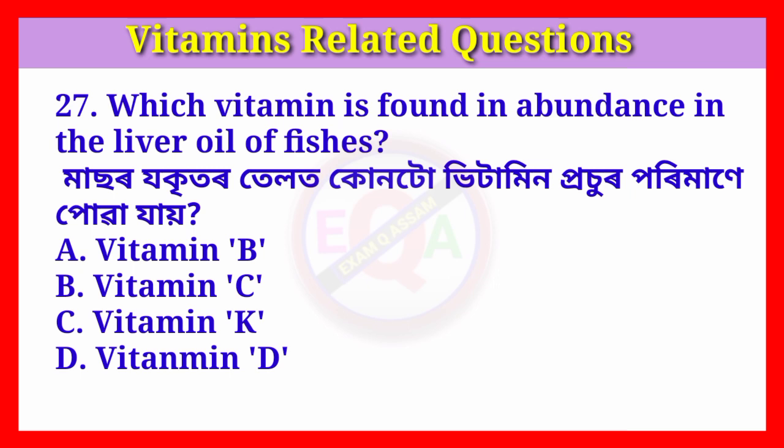Question number twenty-seven: Which vitamin is found in abundance in the liver oil of fish? Answer: Option D, vitamin D.